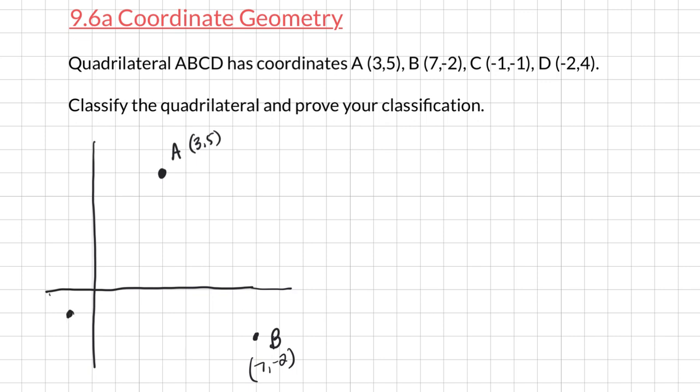C is negative 1, negative 1. And lastly is negative 2, 4. Move that out. Negative 2, 4. This is D, negative 2, 4.